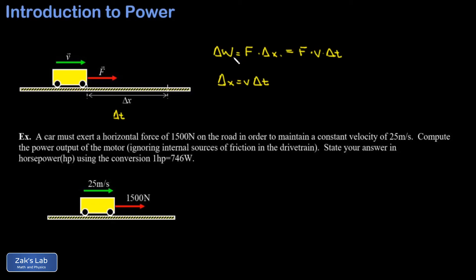I could divide both sides by delta t and find that the rate at which work is being done is given by the force used to maintain the speed of the car multiplied by the speed—F times v. The rate at which work is done is power, so we can write P equals F times v for this special case where a constant force is used to maintain the speed of an object.